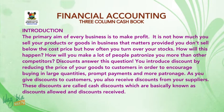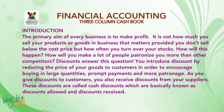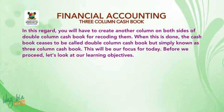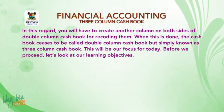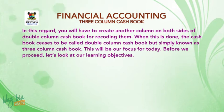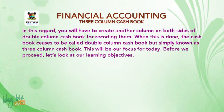Discounts answer this question. You introduce discounts by reducing the price of your goods to customers in order to encourage buying in large quantities, prompt payments and more patronage. As you give discounts to customers, you also receive discounts from your suppliers. These discounts are called cash discounts, which are basically known as discounts allowed and discounts received. In this regard, you will have to create another column on both sides of the double column cash book for recording them. When this is done, the cash book ceases to be called double column cash book, but simply known as three column cash book.